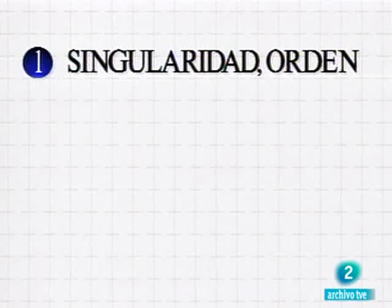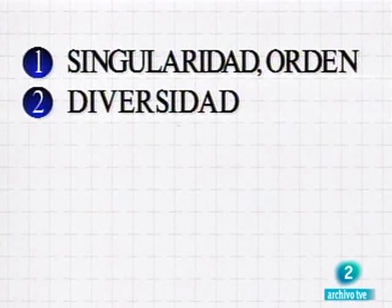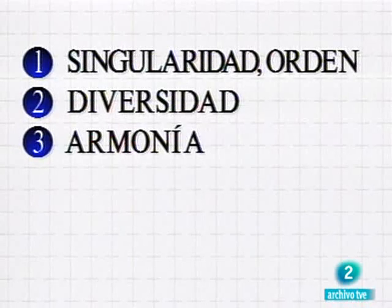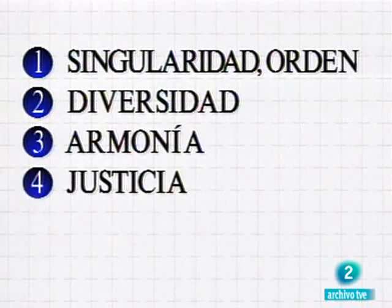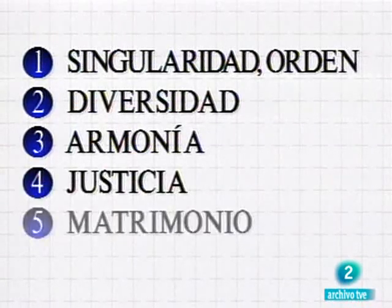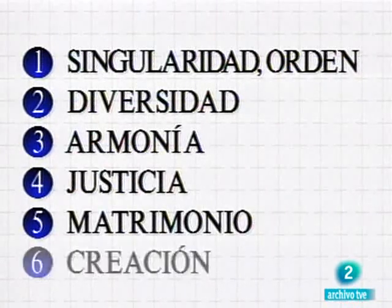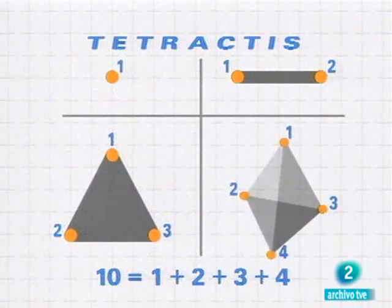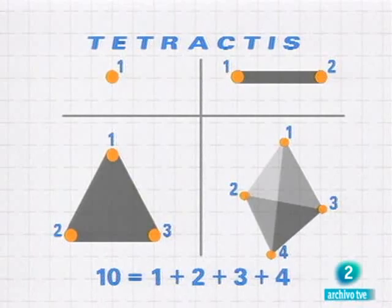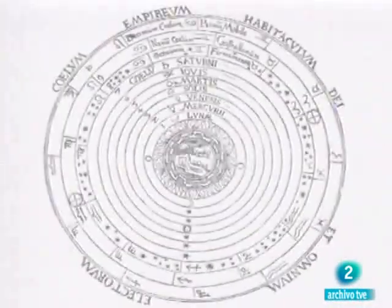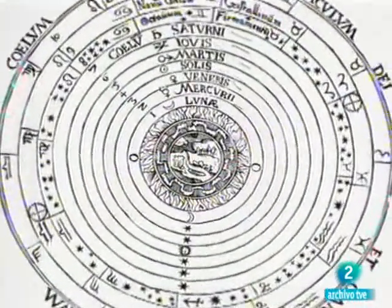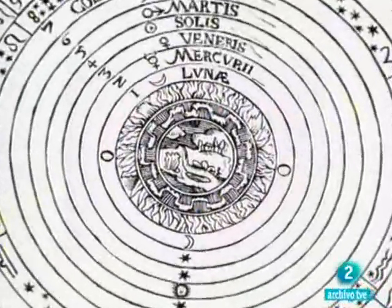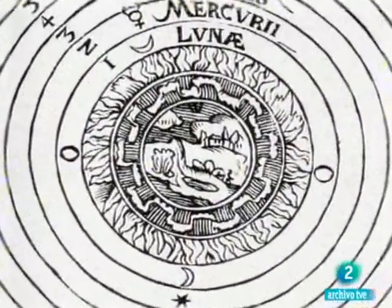Para los pitagóricos, los números abstractos constituían el principio y la explicación última de todo el universo. Todas las cosas que pueden ser conocidas tienen número, pues no es posible que sin número nada pueda ser conocido ni concebido. El orden y la armonía del cosmos explicados a través de los números. De los números y de la geometría. A ellos les debemos el primer modelo geométrico para explicar el funcionamiento del universo, un modelo que va a sobrevivir durante más de dos mil años.